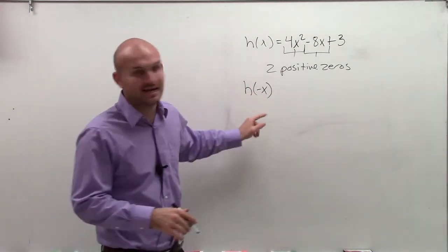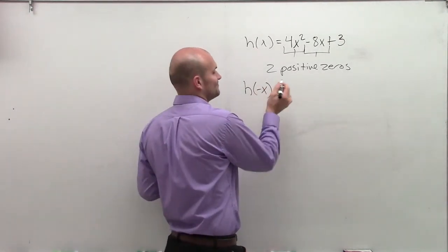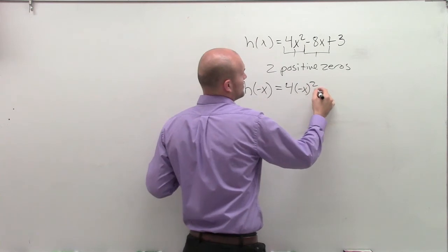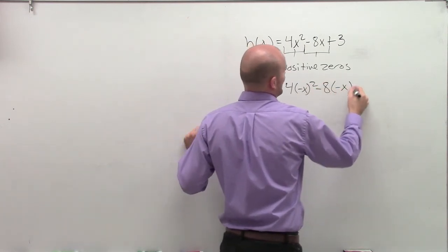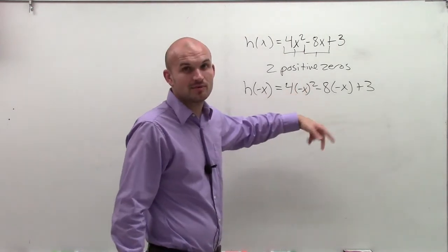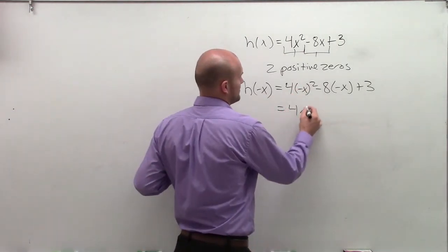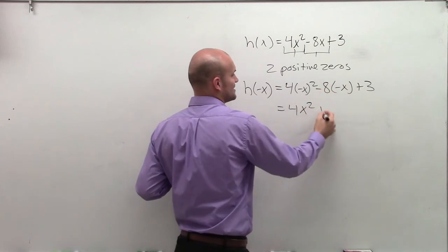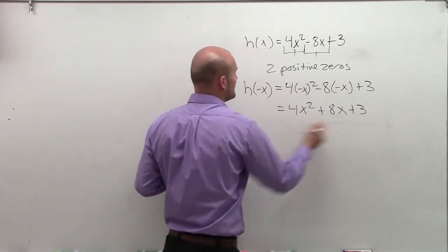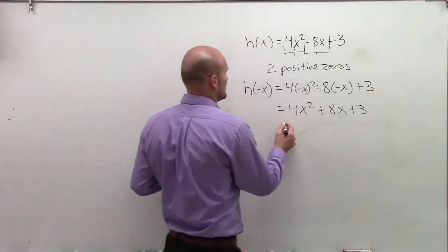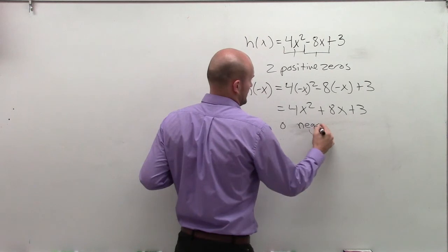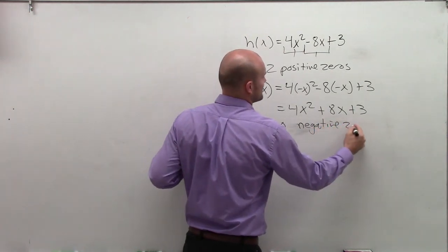For the negative zeros, you plug in negative x. So I have 4 times negative x squared minus 8 times negative x plus 3. Negative x squared is just x squared, so that term remains the same. Negative x times negative x gives a positive 8x plus 3. Notice there's no variation of sign, so there are zero negative zeros.